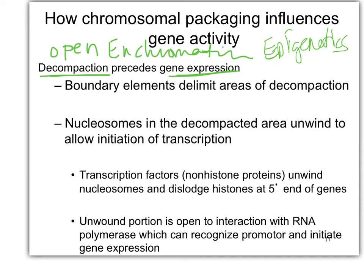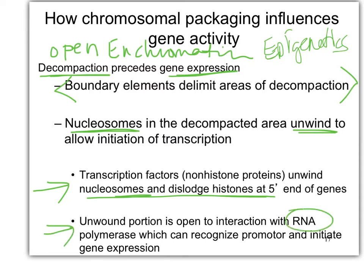There are generally boundary elements that limit the areas of decompaction, so an entire chromosome doesn't need to open — just a specific area. The nucleosomes in this area are a little bit unwound so they can initiate transcription. Transcription factors come in and dislodge the histones, or deacetylate the five prime end of genes. And then this can now interact with RNA polymerase — so TATA binding protein, RNA polymerase — we get transcription.